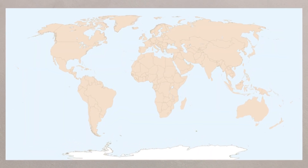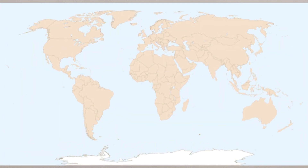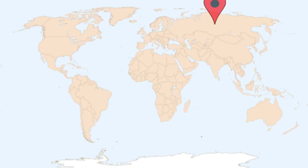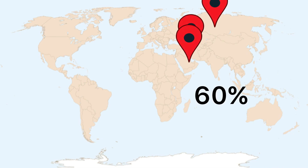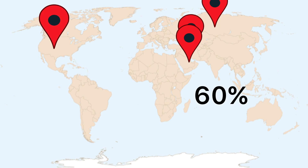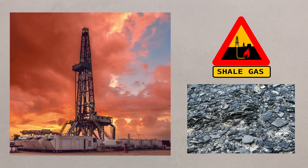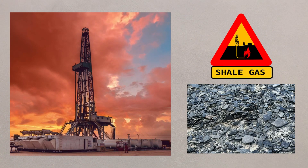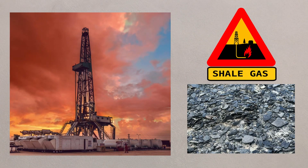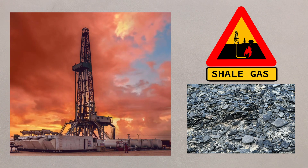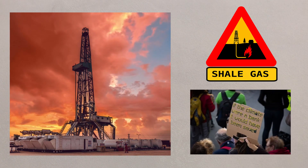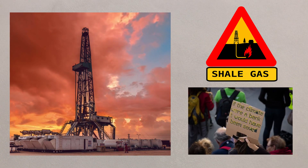Natural gas is unevenly distributed around the world, with Russia, Iran and Qatar having nearly 60% of the known reserves, whilst the USA tops the list for the actual production of natural gas. Technological advances have made shale gas extraction through fracking viable, but the process is controversial and not without serious opposition.